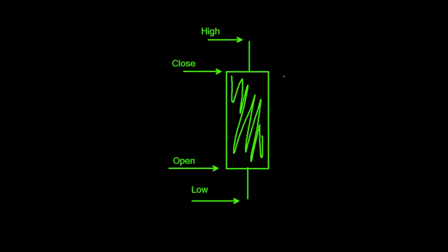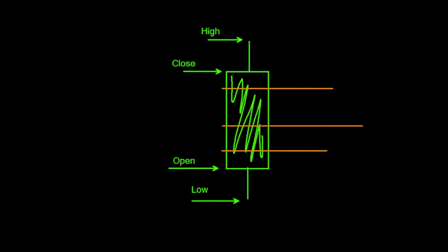This would be considered an upper third type candle. If we put a line through the center and break it into thirds, this candle is closing above the top third — that's considered a very strong candle. More often than not, if a candle is closing up here in the upper third, it means the market had a lot of back and forth struggle and was still able to close all the way back up at the top.